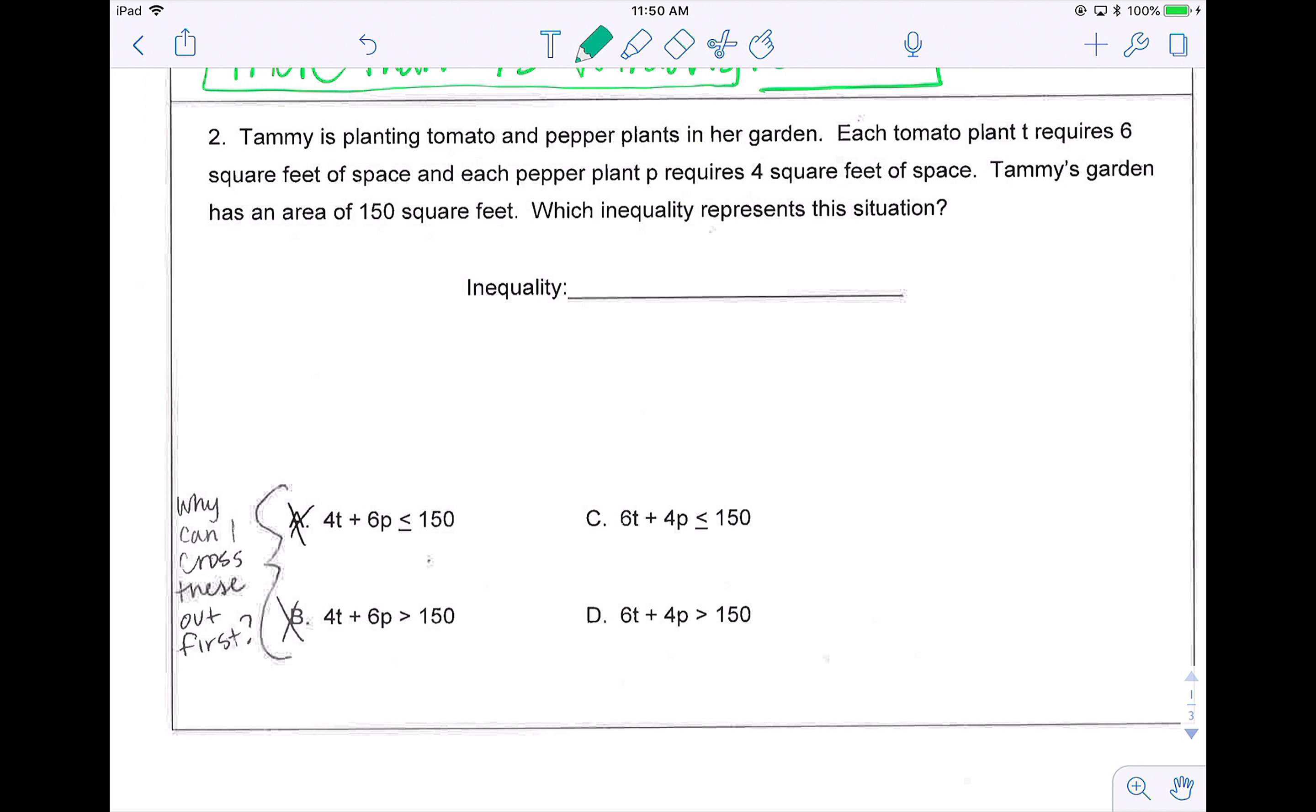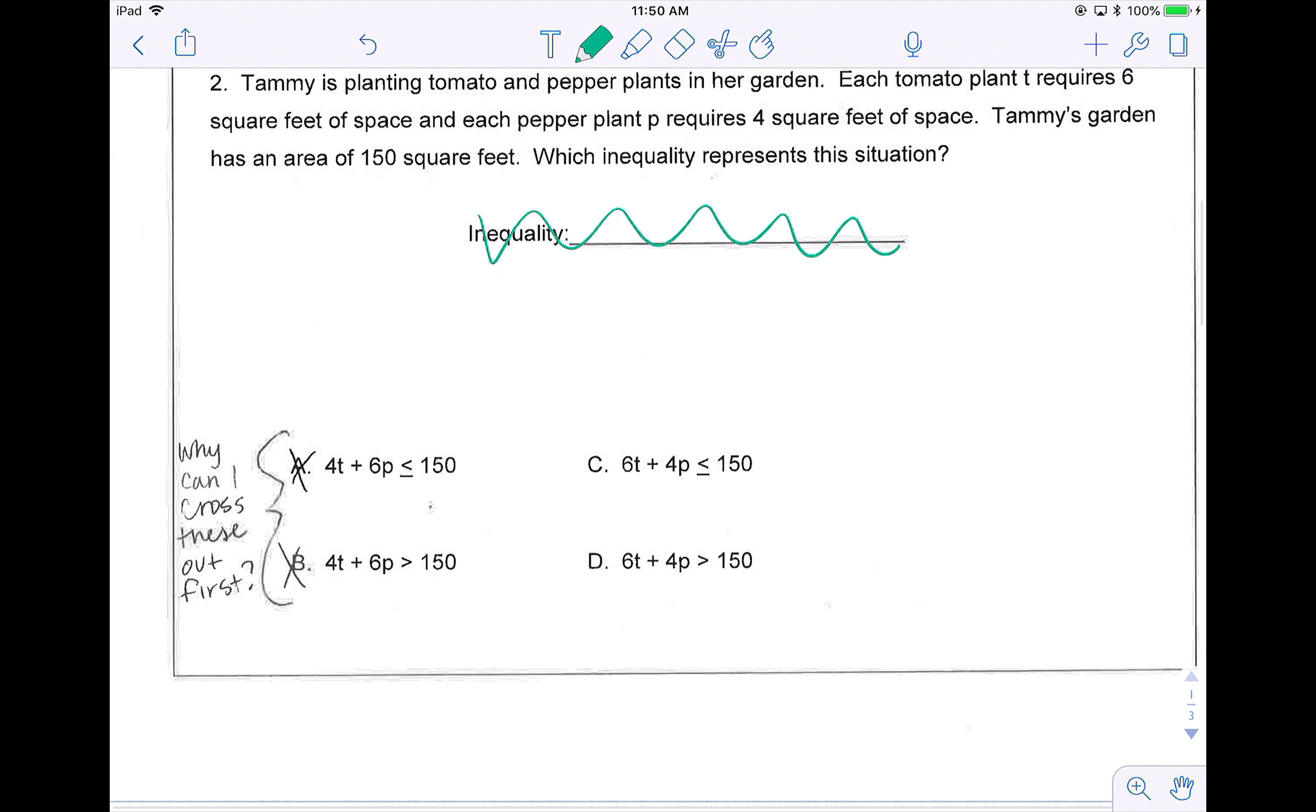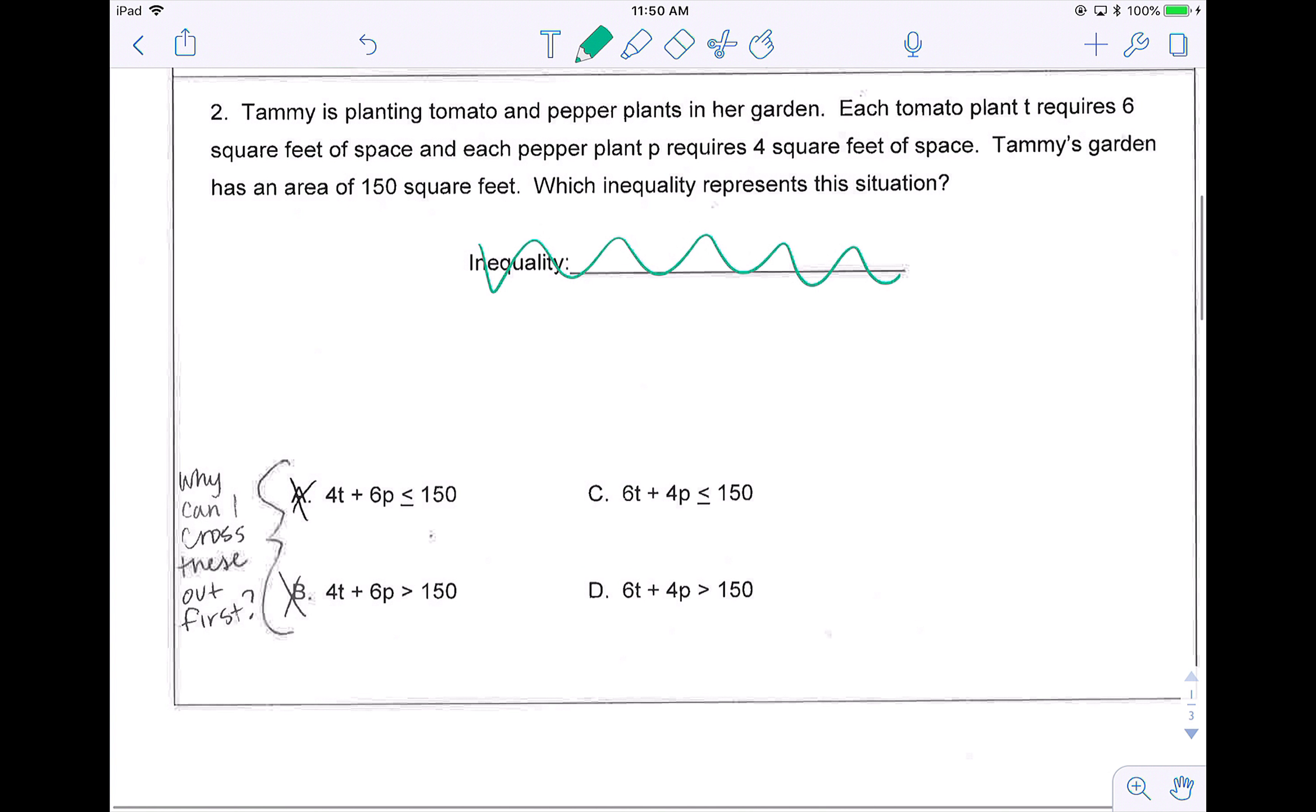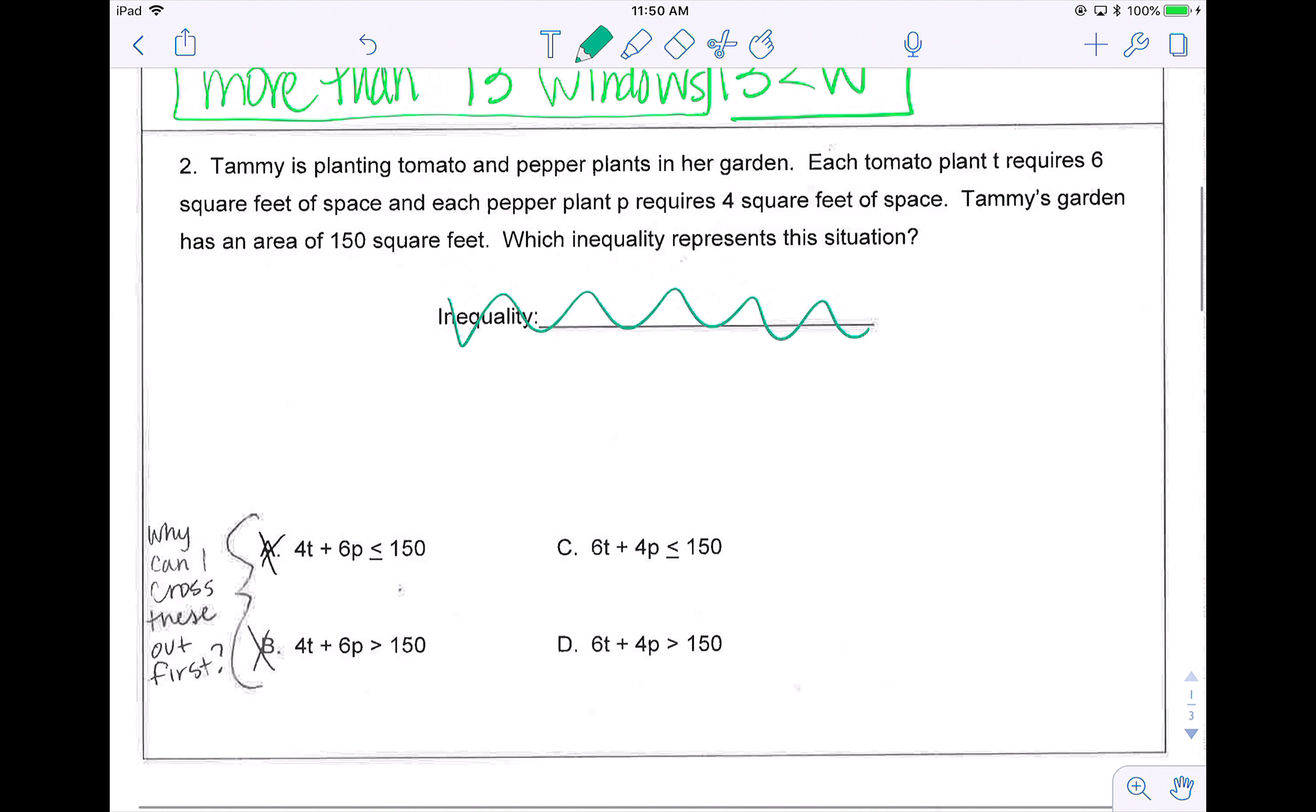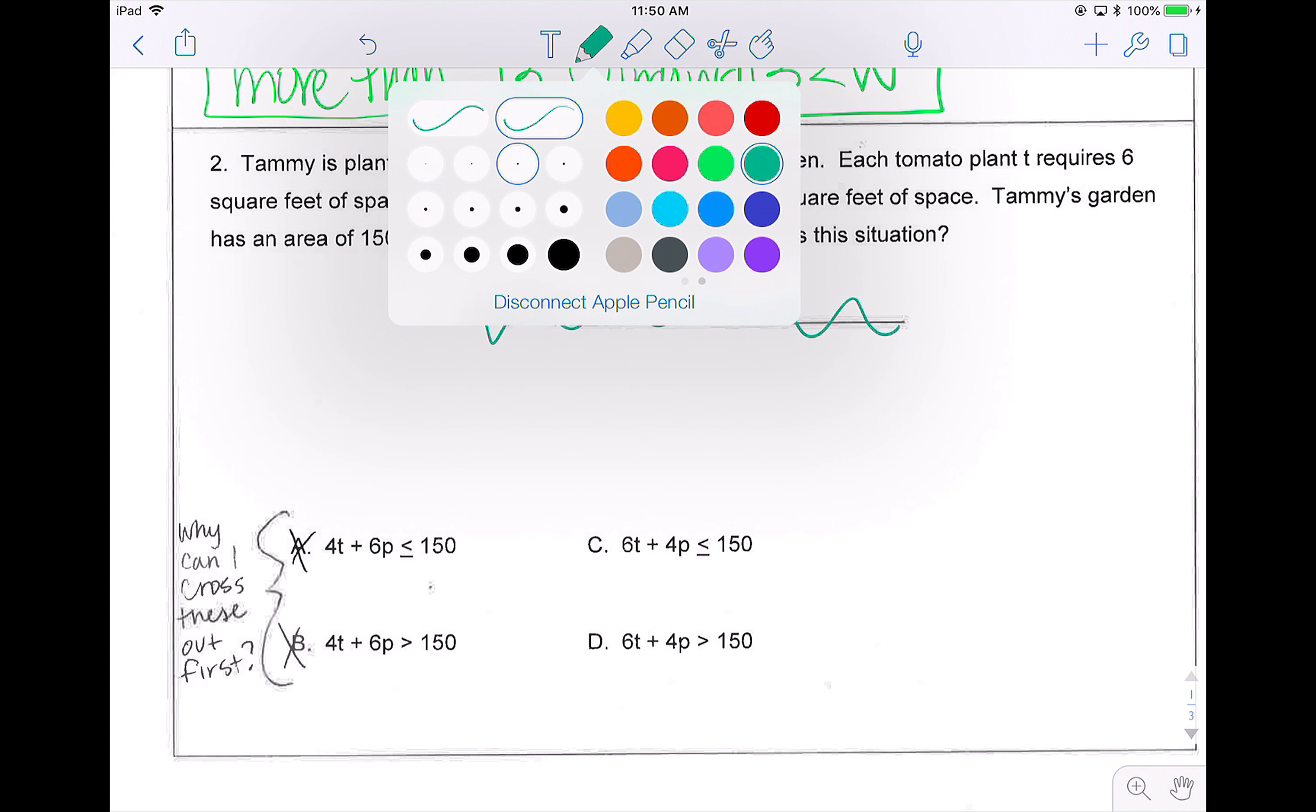Next, we know that Tammy is planting tomato and pepper plants in her garden. Each tomato plant T requires six square feet of space, and each pepper plant P requires four square feet of space. Tammy's garden has an area of 150 square feet, which inequality represents the situation. I'm not really going to actually write an inequality. I'm actually just going to circle an answer choice. So when I look at A and B, they've already been crossed out.